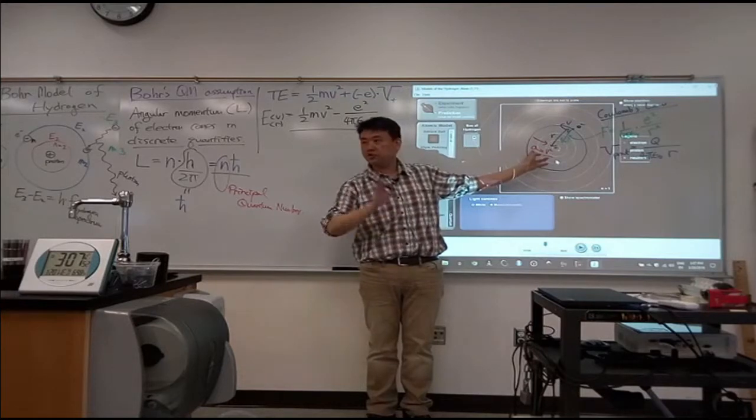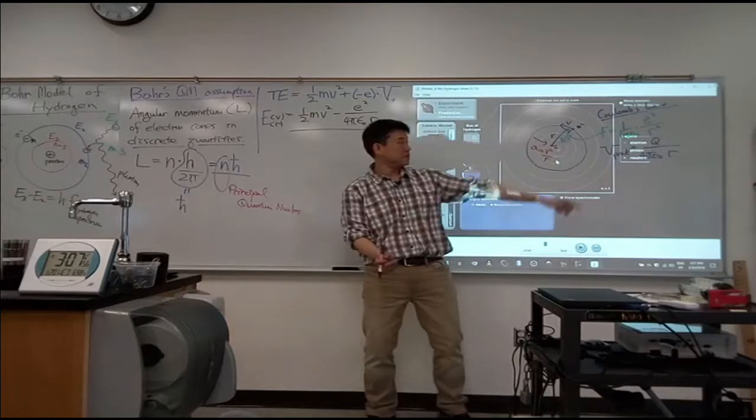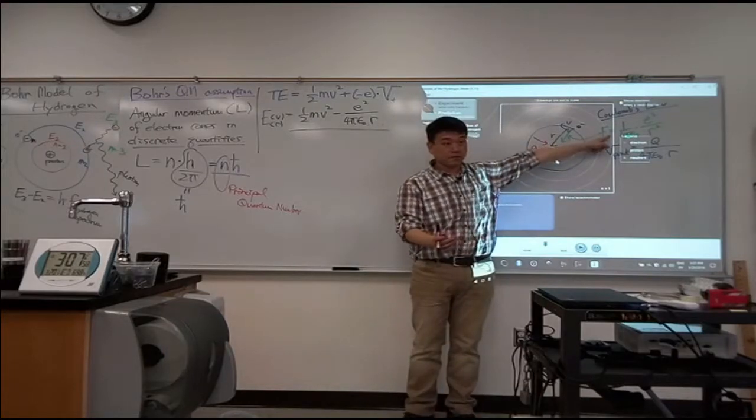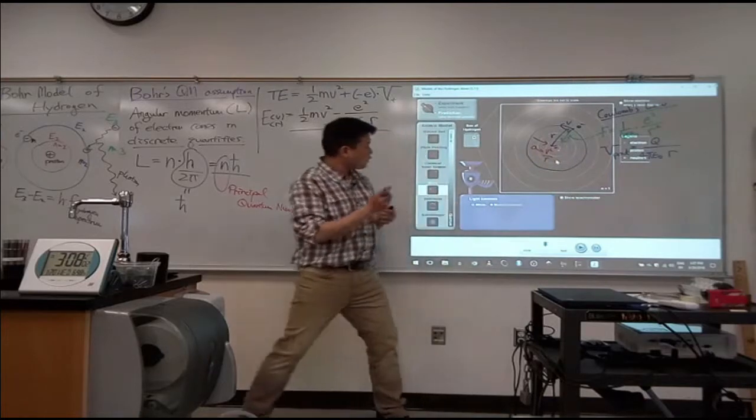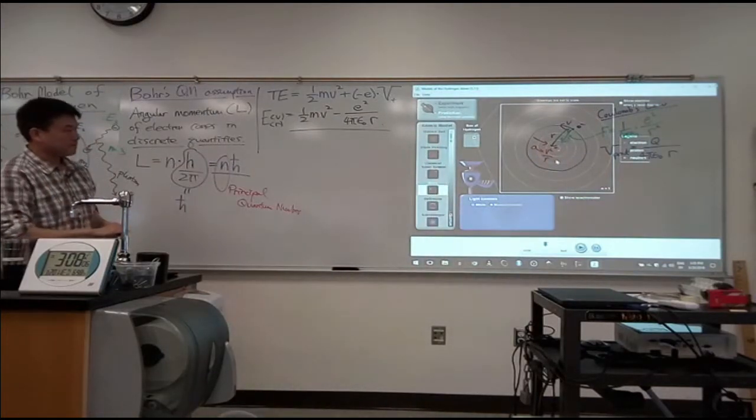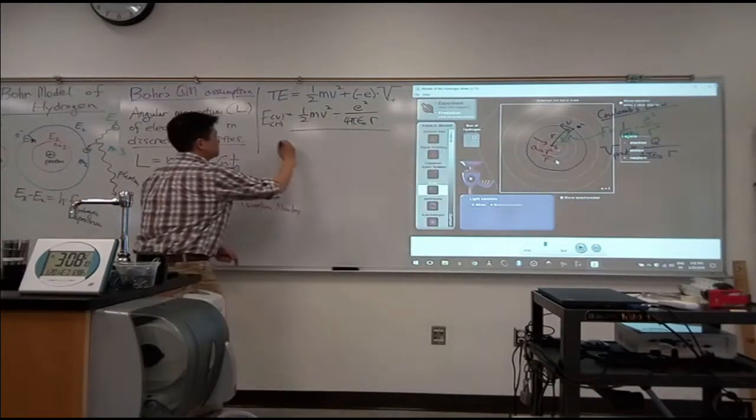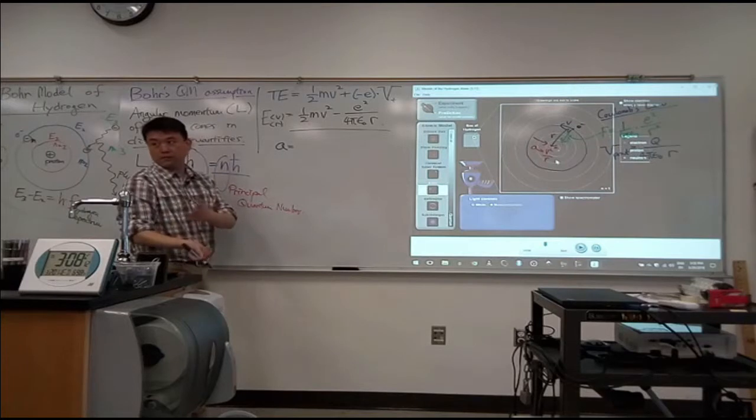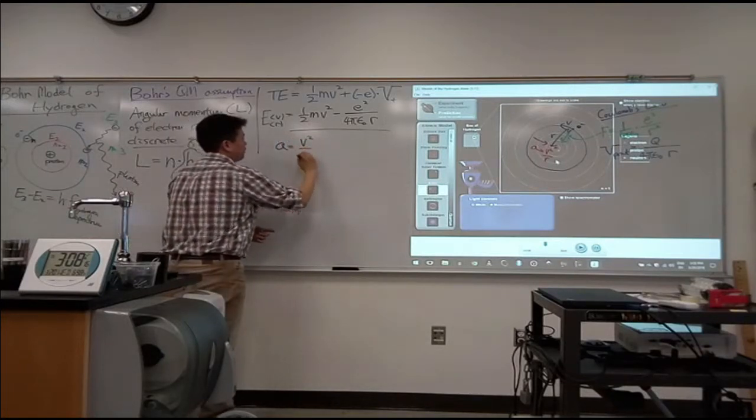When you have uniform circular motion, what do you have? This is physics 4a, like a second semester material. V squared over r. So what does a v squared over r give you? The centripetal acceleration. Centripetal acceleration. So whenever you have something that's moving in circle, it is accelerating.